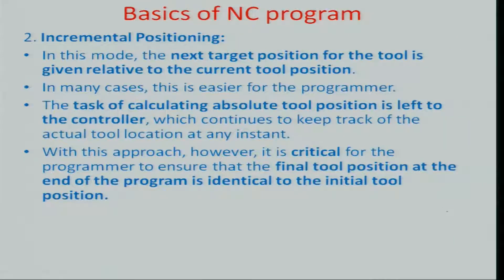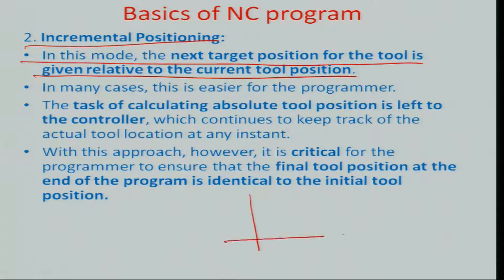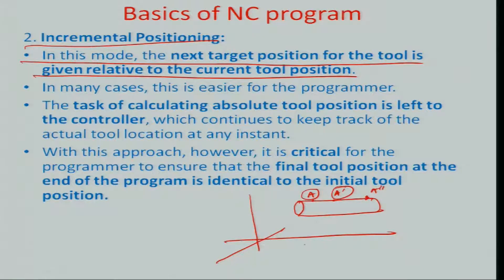Incremental positioning is a mode where the next target position for the tool is given relative to the current tool position. In the same illustration, all you need to know is the relative location change between A and A prime, or A double prime. This incremental difference is given to the program, and the program then calculates what that means in terms of change in the coordinate system relative to the origin. It is more taxing on the controller and less taxing on the human. In real-life situations both absolute and incremental positioning are used, but in this course we will limit ourselves to absolute positioning.